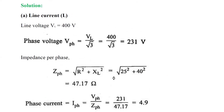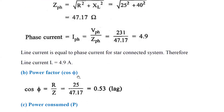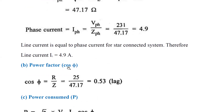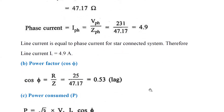Next, we need to calculate the power factor. From the power triangle, cos φ is equal to R divided by Z. R is 25 ohms as given in the problem, divided by Z which we calculated as 47.17, giving a power factor of 0.53 lagging.